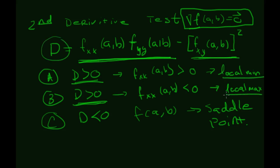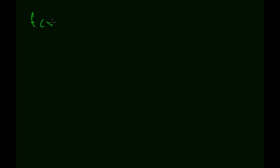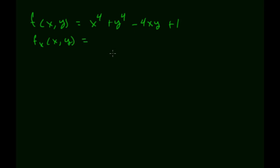So first we look for where the gradient equals zero, then we use D to determine whether that point is a local minimum, local maximum, or saddle point. Once we have that, we can search for the absolute maximum or minimum, since you have to be a local max or min to be an absolute max or min. Let's take the example function f(x, y) = x⁴ + y⁴ − 4xy + 1.